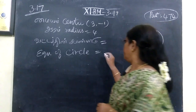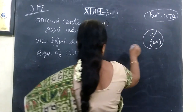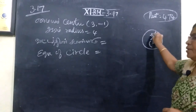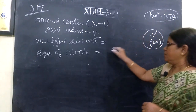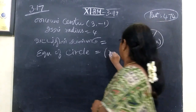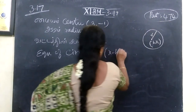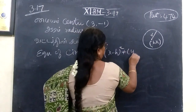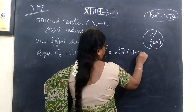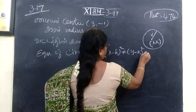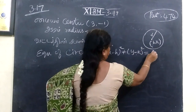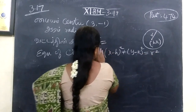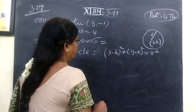The equation of a circle with center (h, k) and radius r is: x minus h whole square plus y minus k whole square equal to r square. This is the equation of circle.